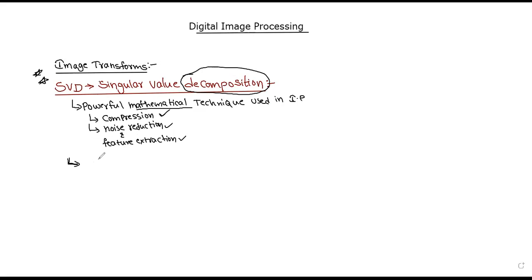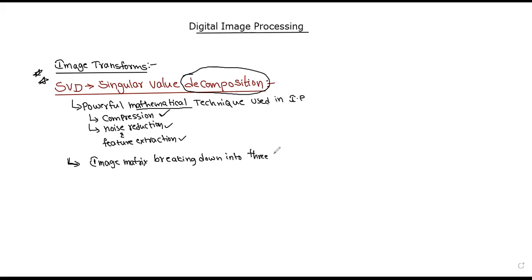It involves breaking down an image. An image can be written in matrix form — an image matrix. Breaking down and dividing into three separate matrices.